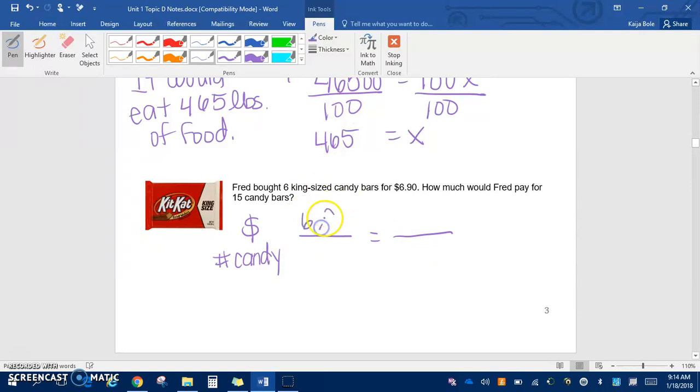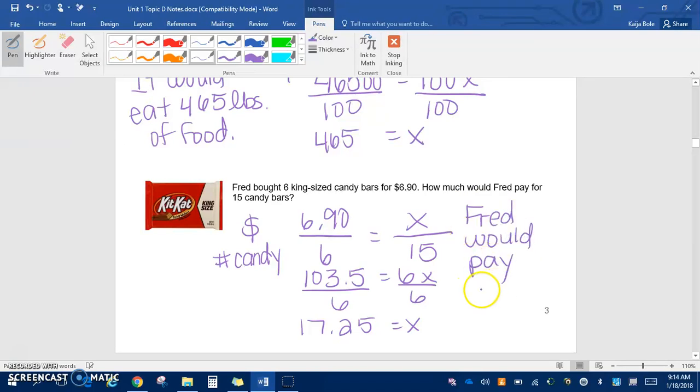Set up your blank proportion. Now we fill in what we know. We know that it was $6.90 for six of them, and we want to know how much for 15. Now we use our cross products, and if you multiply 6.9 times 15, you get 103.5 equals 6x. Divide by 6. You get that 17.25 equals x. Remember, you need a label. So we would say that Fred would pay $17.25.